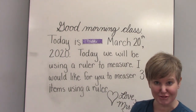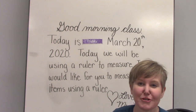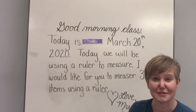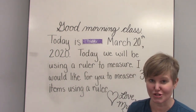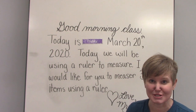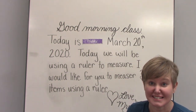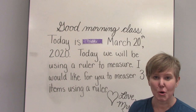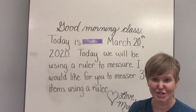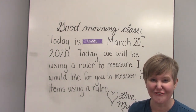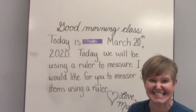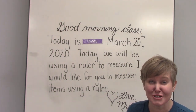Before you go find a ruler, I want to review a couple of things that we did in math this week. The first thing is counting by 100 all the way to 1,000. Let's count together: 100, 200, 300, 400, 500, 600, 700, 800, 900, 1,000.